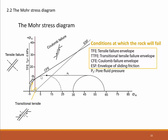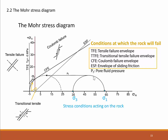Here we see a Mohr circle with a maximum principal stress σ1 of about 63 MPa and a minimum principal stress σ3 of 34 MPa, describing the stress conditions acting on a specific rock. The semicircle connecting the maximum and minimum stresses is far away from any failure envelope, including the envelope of sliding friction. This is a stable stress condition — the rock could withstand these stresses without failure, and even if fractures are present, none would slide.